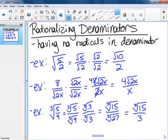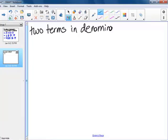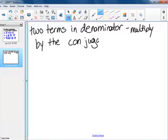Now, these all had just one term in the denominator. The last one we'll do is if we have two terms in the denominator. What we do when we have two terms in the denominator is multiply by the conjugate of the denominator.